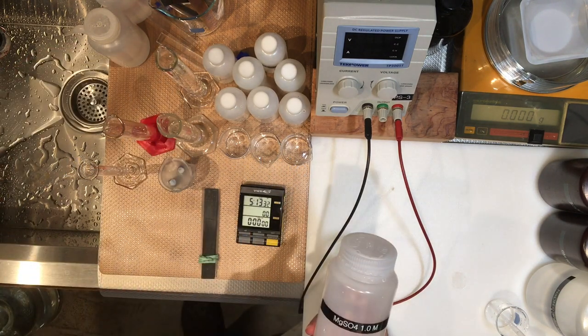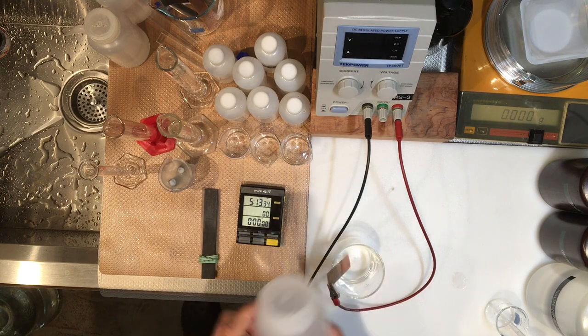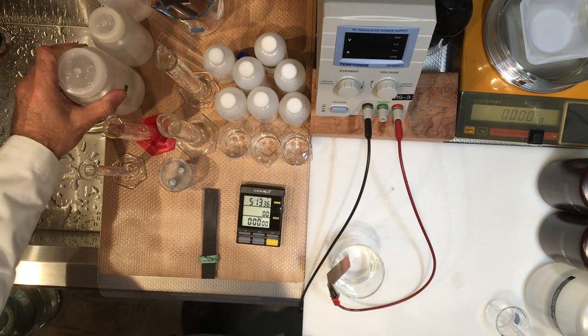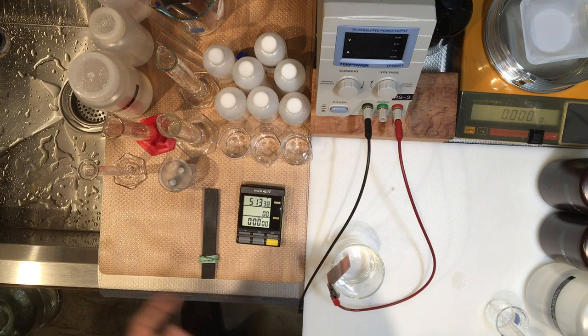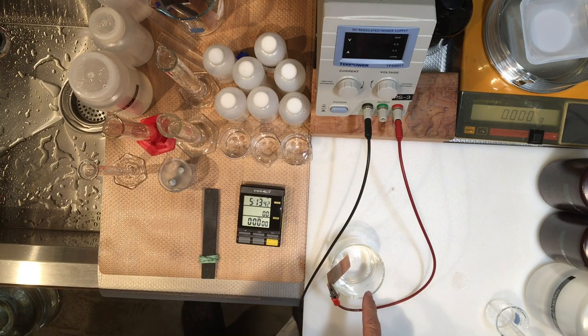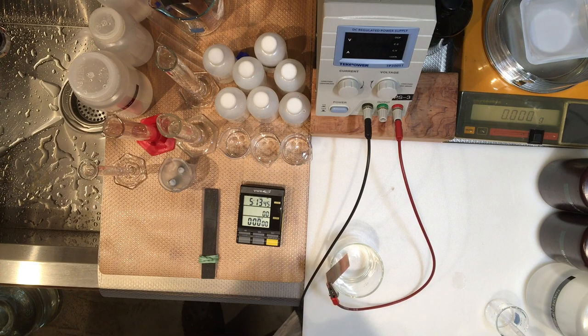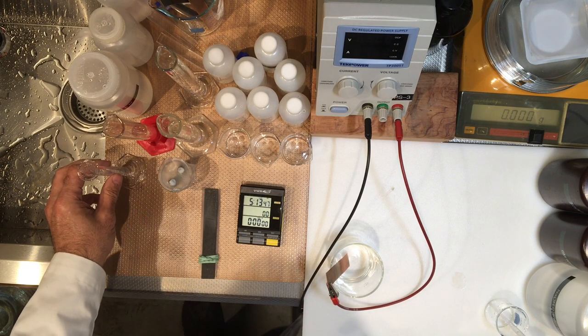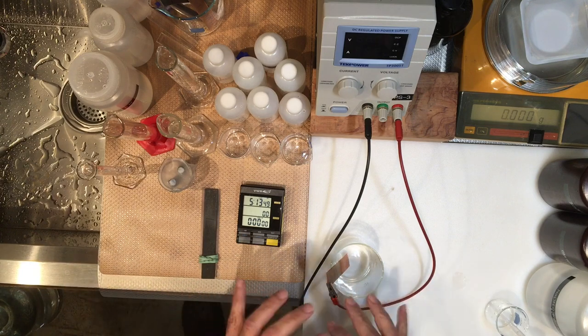The electrolyte is magnesium sulfate, one molar concentration, and I'm going to pour in 130 milliliters of electrolyte into this cup, and I'm going to use 10 ml later for washing the electrodes.